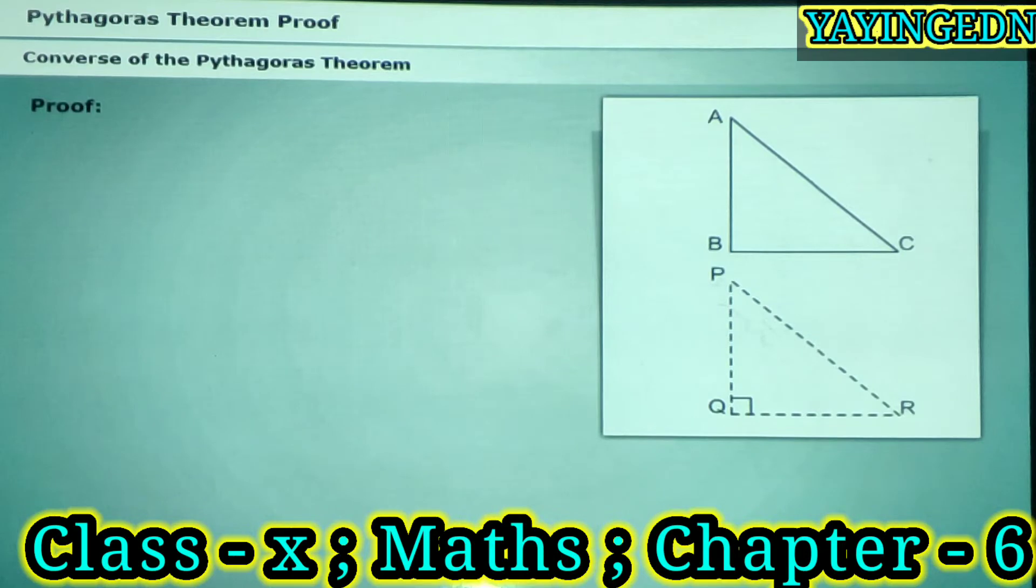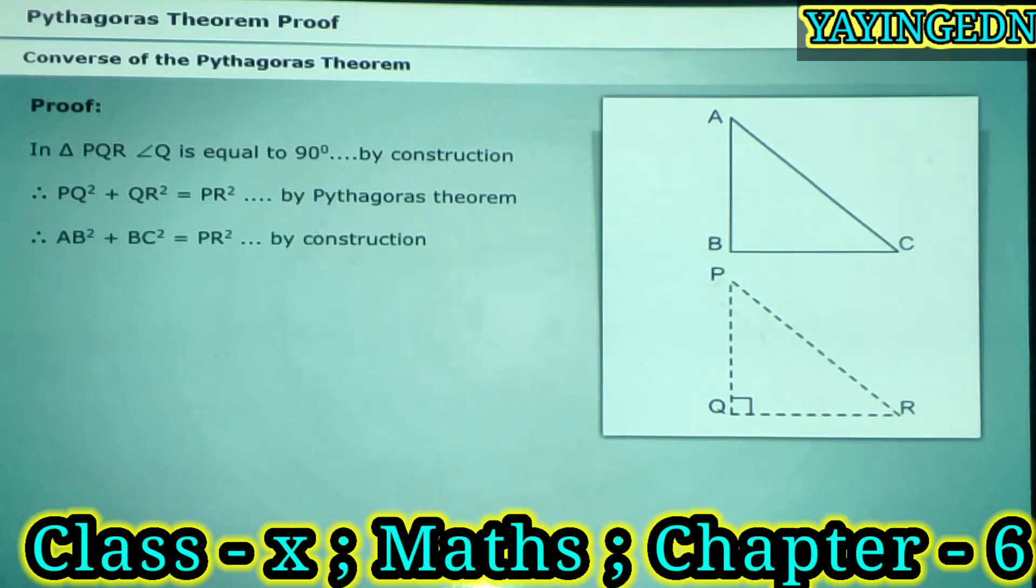This is how we prove. In triangle PQR, angle Q is equal to 90 degrees by construction. Therefore, PQ squared plus QR squared is equal to PR squared by Pythagoras' Theorem.